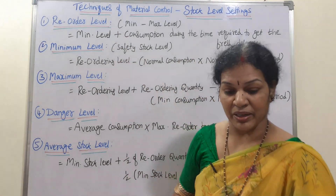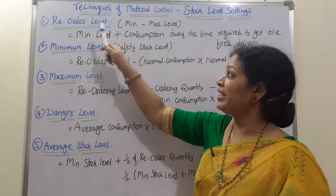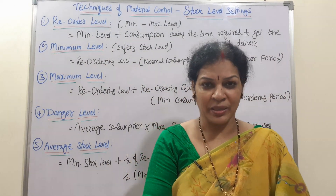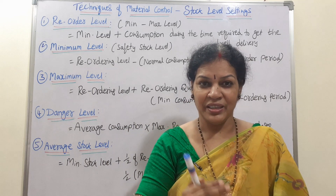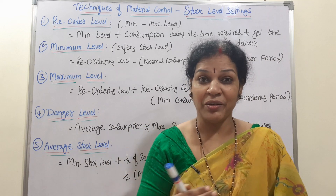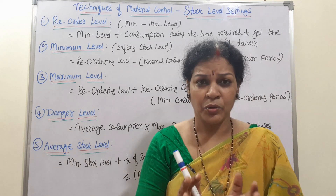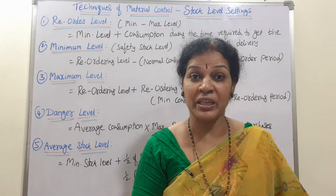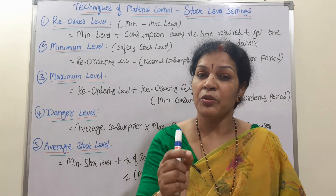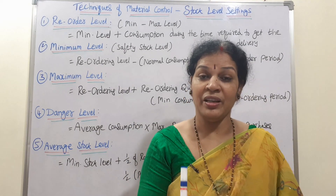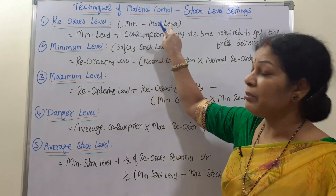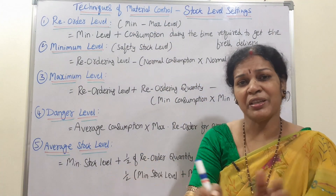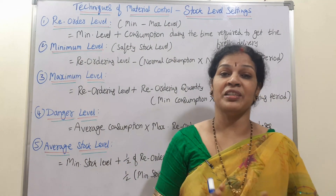The first one is reorder level. Reorder level means whenever material is completed, we have to reorder that material. But how much is that reorder level? To order that material, how much stock needs to be kept? That is reorder level. This reorder level will be set somewhere in between the minimum and maximum level.